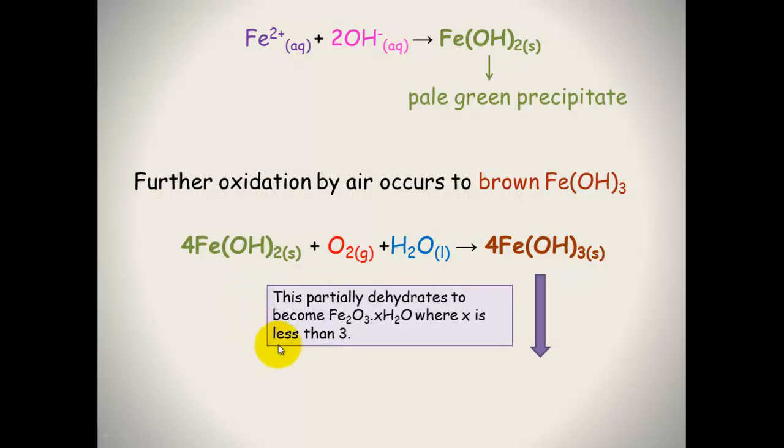This will then partially dehydrate or lose water to become iron two oxide. And this is what we commonly know as rust. So you can see it's quite a complex process. There's a few different steps and a few different series of oxidation occurring. But importantly, water plays an important part. And this is why wet corrosion occurs much more rapidly than dry corrosion.